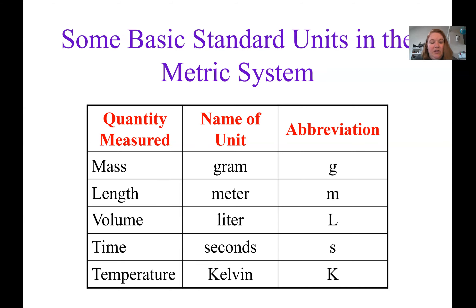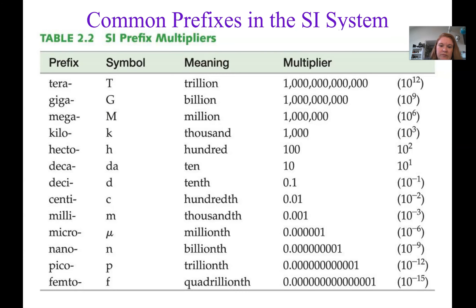Now we're looking at the actual units themselves. These are the standard metric units, and using them gives us a universal language throughout science. The majority of the world uses metric units. Because we use the meter as a standard length, we want to express very large values like a megameter and very small units like a micrometer. Prefixes change the size of our unit while staying within the metric system, which is built on a base-10 system — making conversions between units easy.